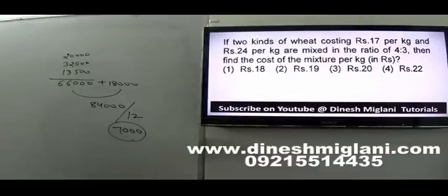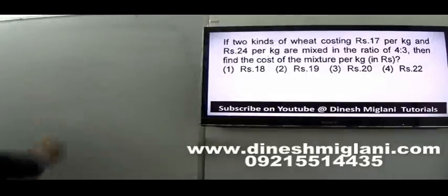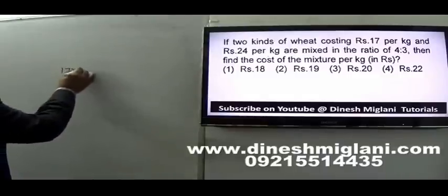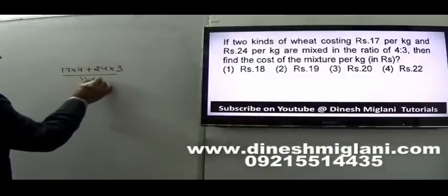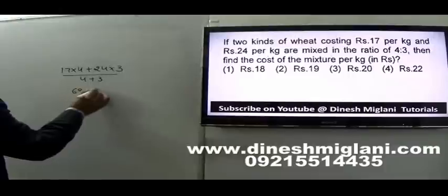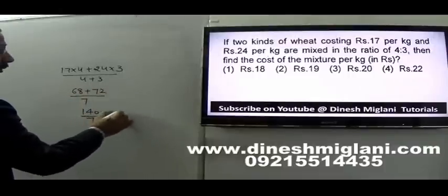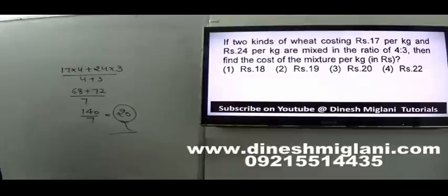Question 16: Two kinds of wheat costing 17 per kg and 24 per kg are mixed in ratio 4:3. Find the cost of the mixture. Total cost: (17 into 4) plus (24 into 3) equals 68 plus 72 equals 140. Total quantity: 4 plus 3 equals 7. Average cost: 140 divided by 7 equals 20. The cost of the mixture is rupees 20 per kg.